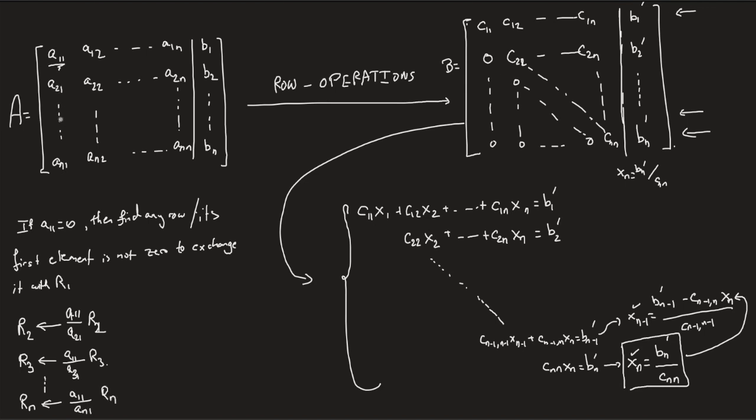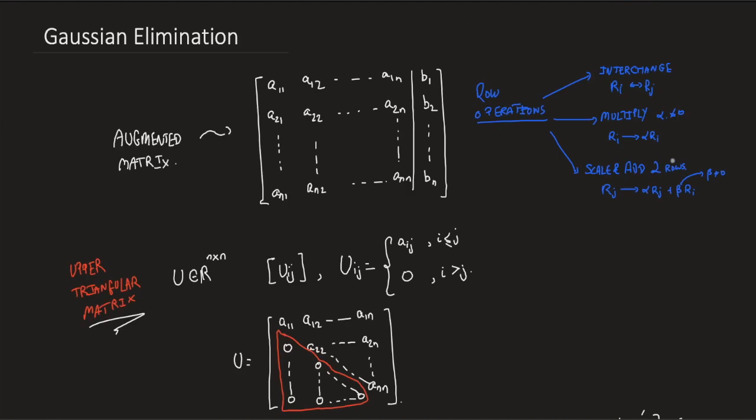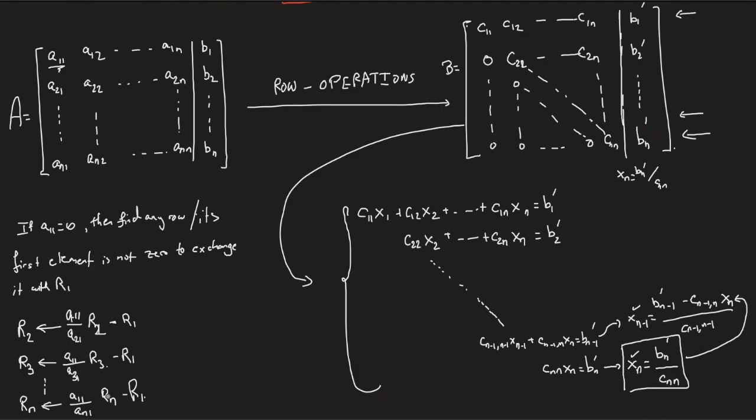And then once you have an A_1,1 here, all the way here, you just, you know, you subtract R1, right? Why is this allowed? It's because we're allowed to scale and add two rows. Okay, so that's what we're doing. We're scaling and adding two rows and inserting it in one of those two rows.